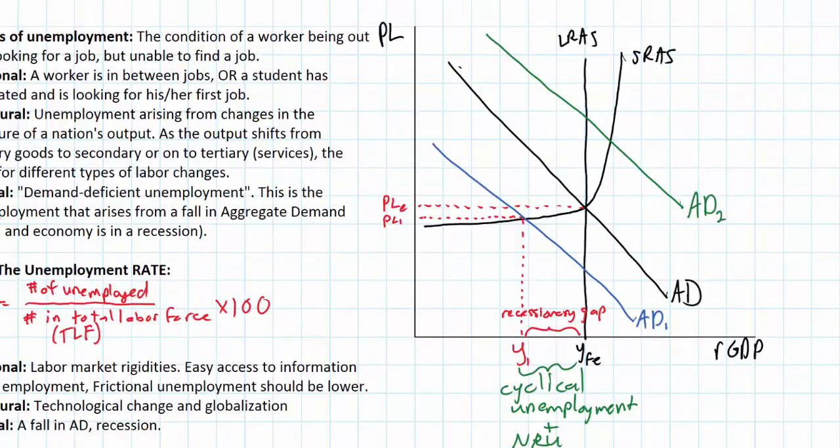So assume AD shifts out to AD2 due to either an increase in consumption, investment, maybe an increase in net exports, or poor fiscal policy such as a decrease in taxes or an increase in government spending. Due to the inflexible nature of wages, firms are going to hire more workers and the unemployment rate will actually fall below the natural rate of unemployment. So at Y2 we have what's called an inflationary gap.